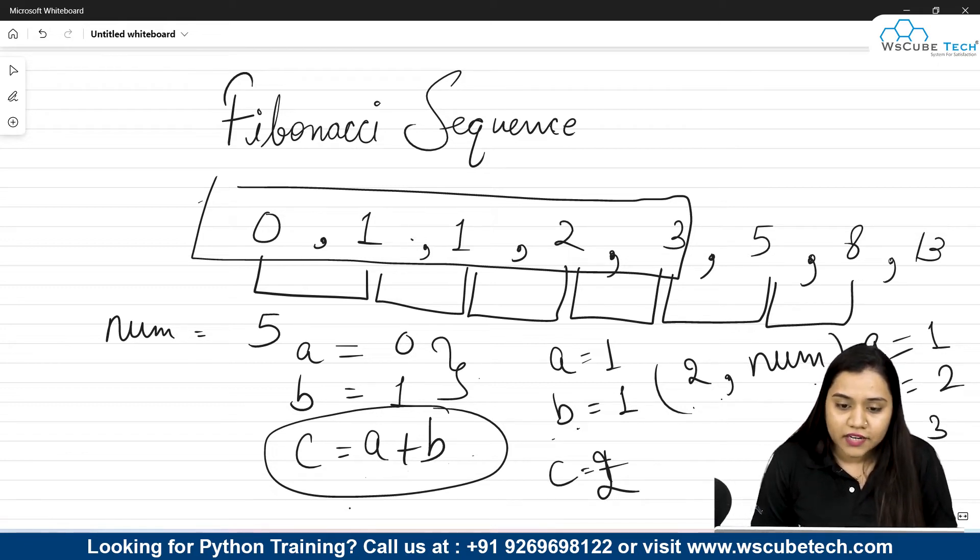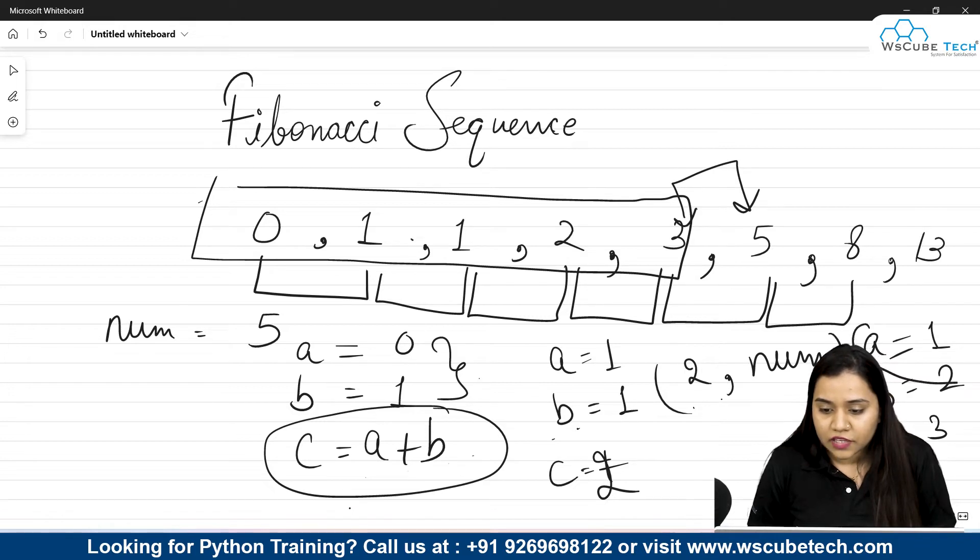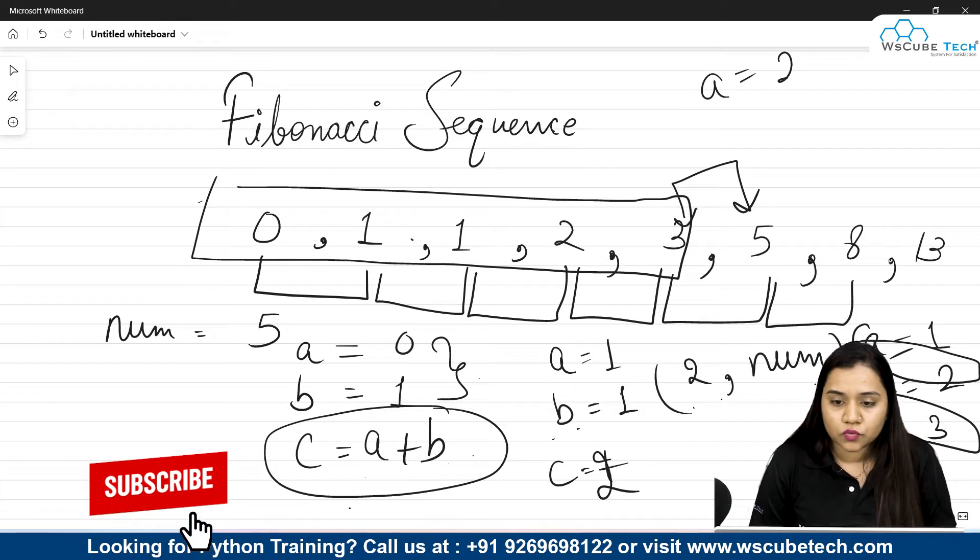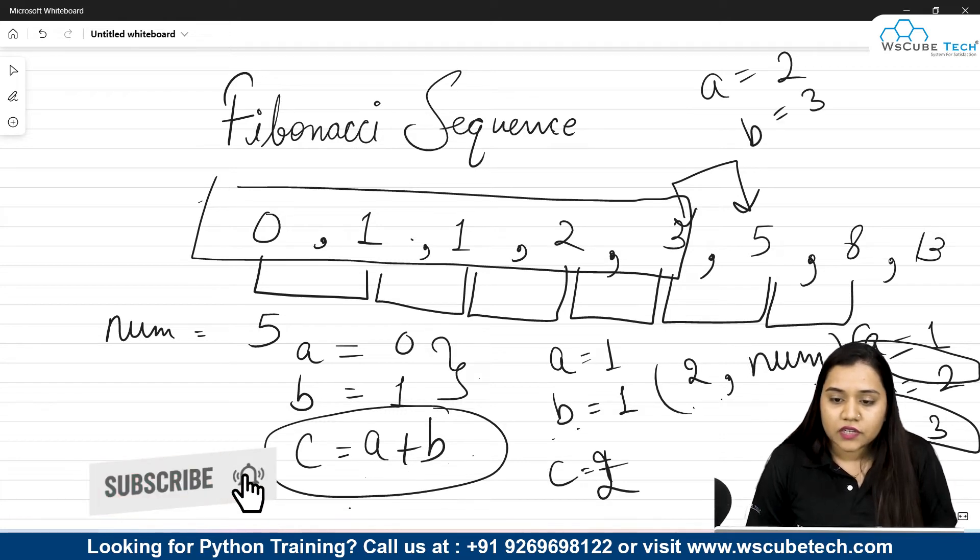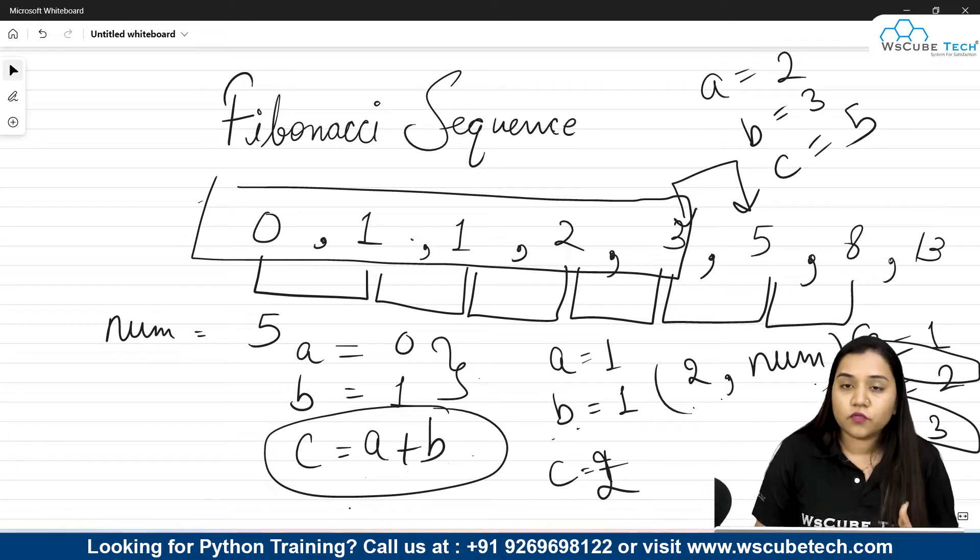Again if I will go for the next iteration what will happen? Suppose if I talk about this iteration over here. So A will become 2. After this A will become 2, B will become 3. So A is equals to 2, B is equals to 3, and C will be addition of both of them that is 5. So this is what we need to follow inside our for loop. Let's use it inside the for loop and let's see what happens.